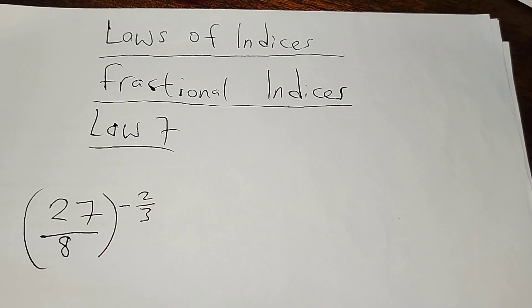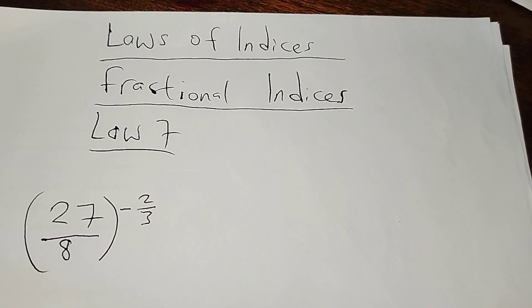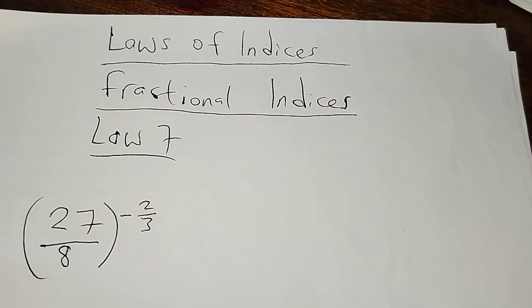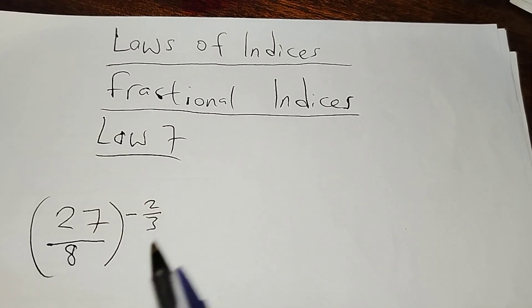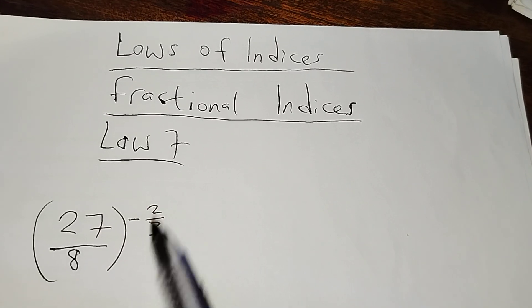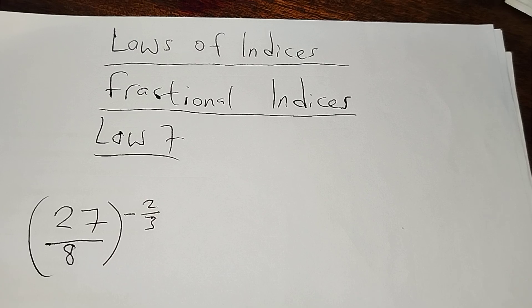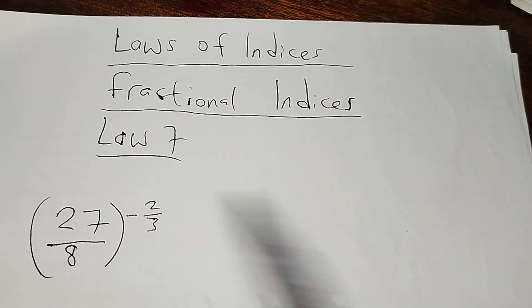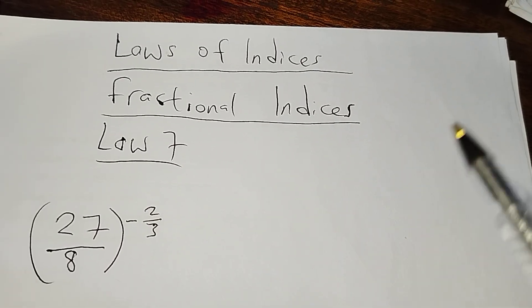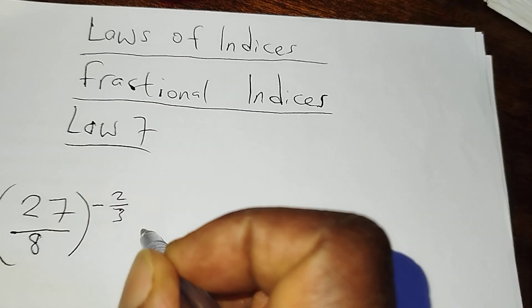We've got a fraction 27 over 8 raised to the power negative two thirds. So first of all we must deal with the negative sign on this fractional index or this fractional power. So how do we remove the negative sign?